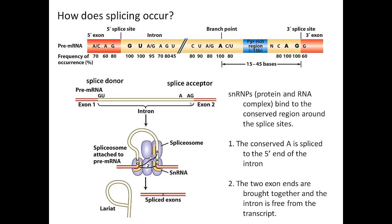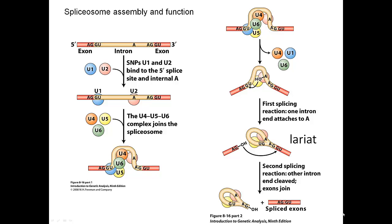The two steps involved in splicing are: first, the branch point A attacks the beginning of the intron and makes a bond with the G at the splice donor. This forms a little loop in the RNA, then releases the end of this exon, which attacks the beginning of the next exon, forming a bond between those two. You end up with the two exons spliced together, and the intron is released in a lariat form — a loop with a little stem.